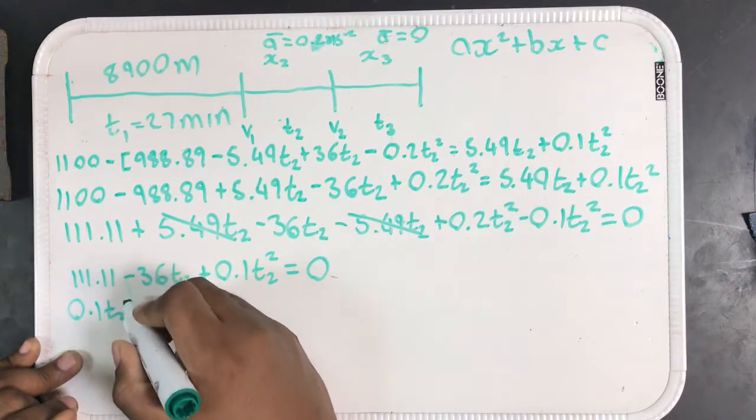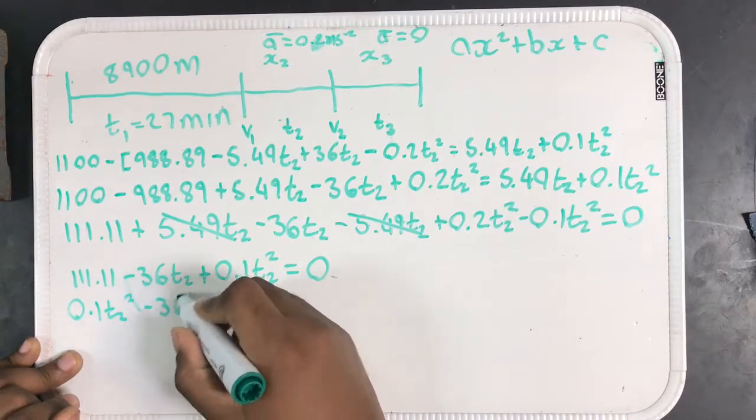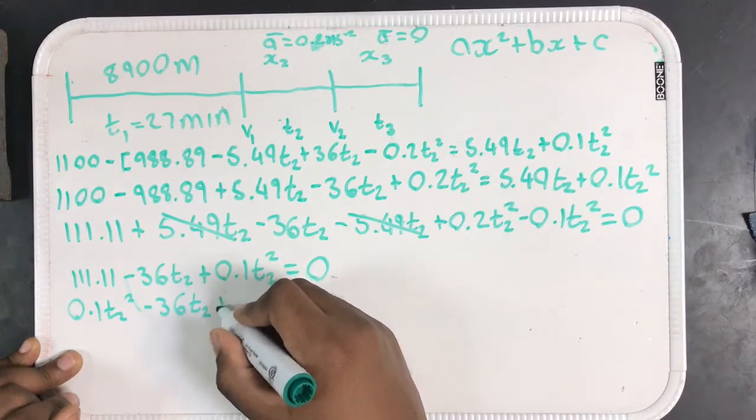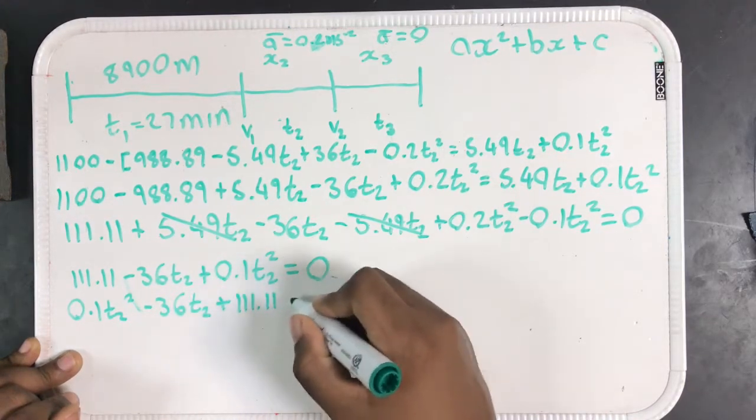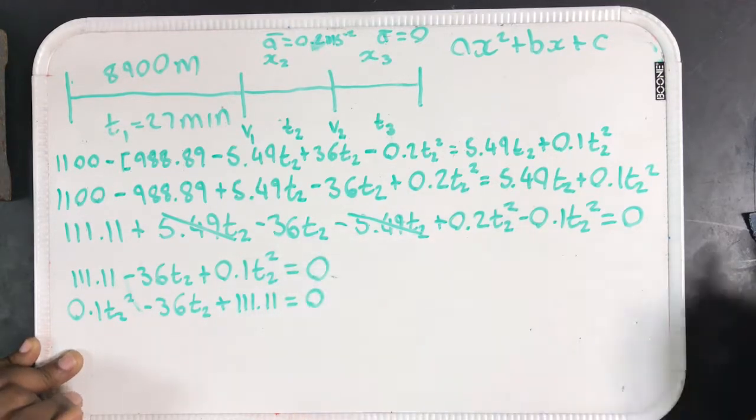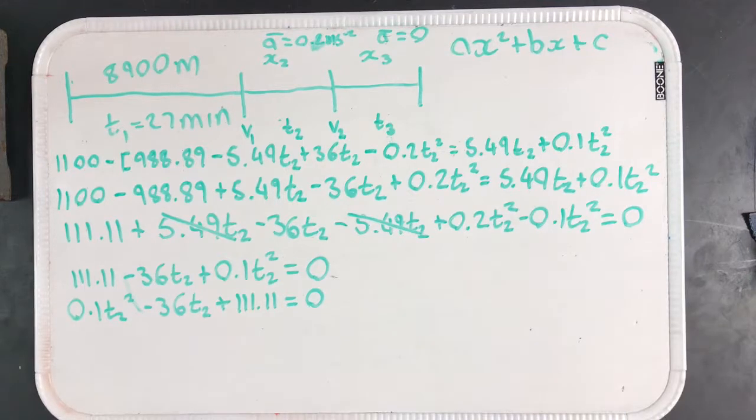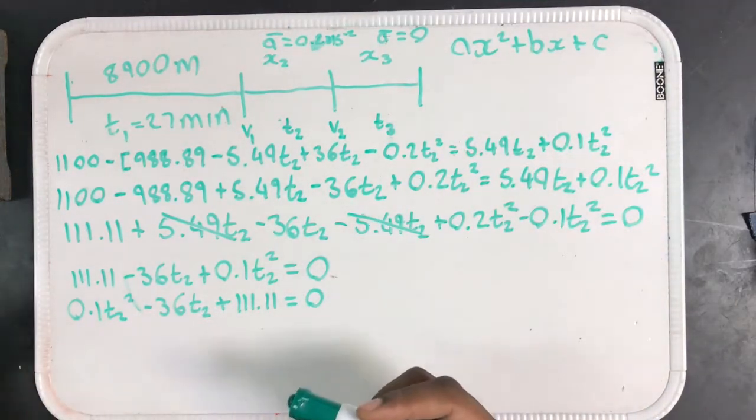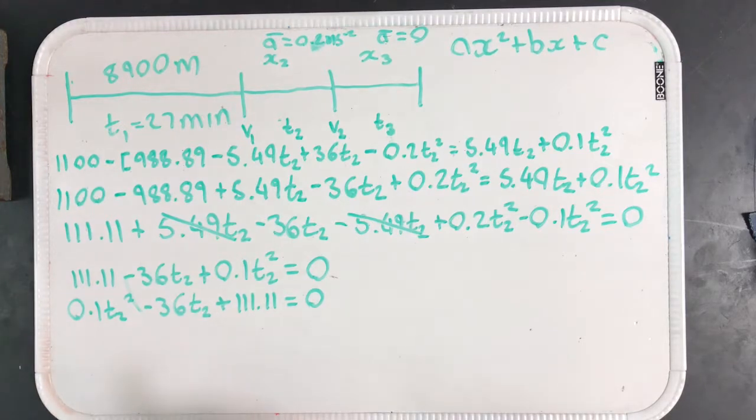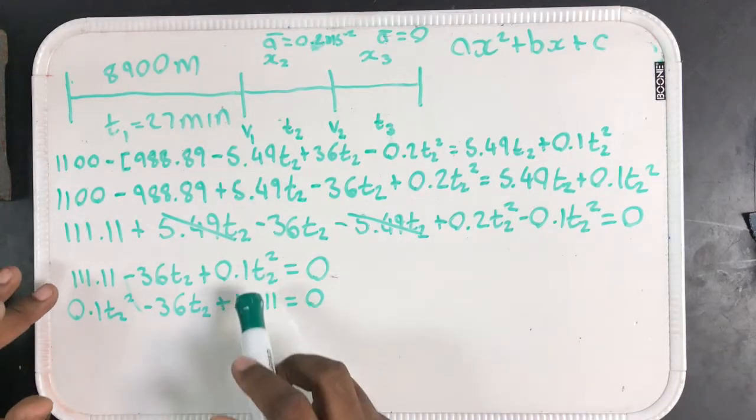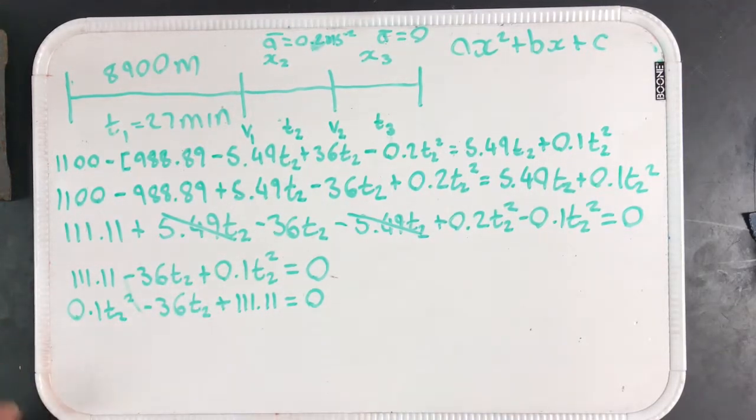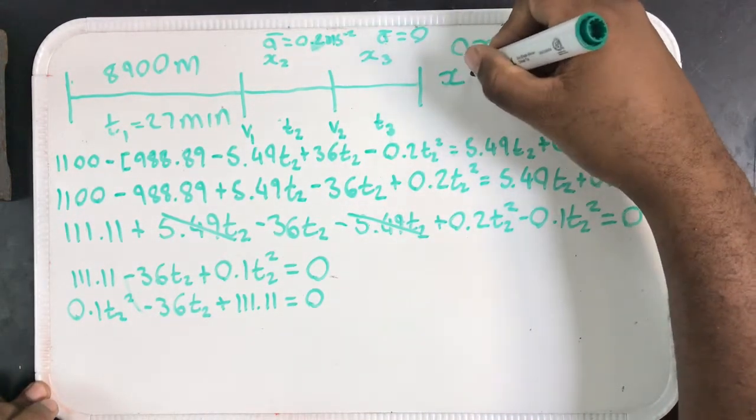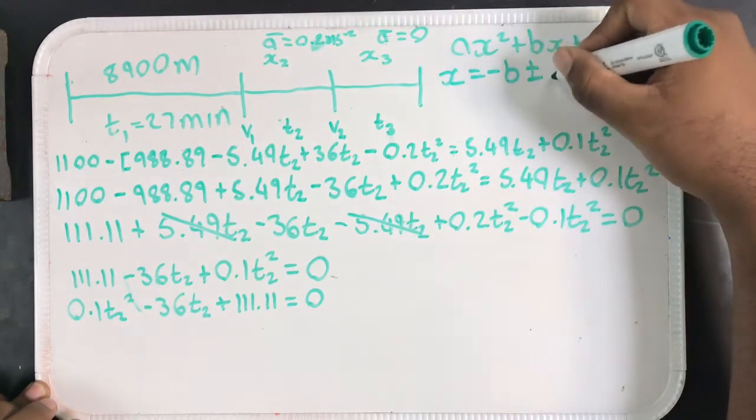If I were to write this in this form, I have 0.1 T2 squared minus 36 T2 plus 111.11 equals 0. However, you should get used to being able to recognize this right from this equation. Even though it isn't arranged the same, we know from properties of real numbers, it doesn't matter the order in which they are. That's the beautiful thing about properties of real numbers. Since it's structured like that, I know the solution to this.